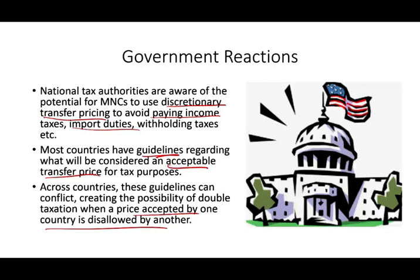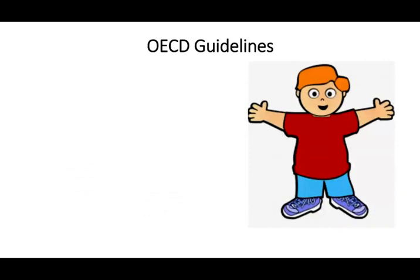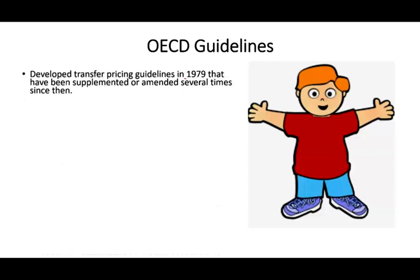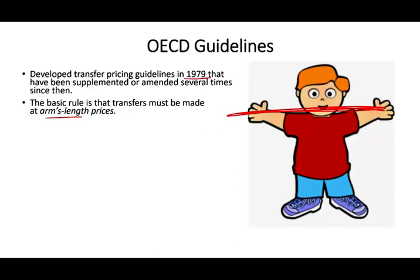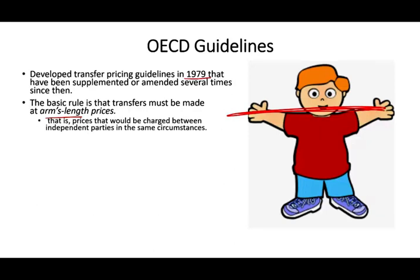The OECD guidelines started to develop transfer pricing rules as early as the late 1970s, and they have supplemented and amended those rules over the years. The basic rule is that transfer prices must be made at arm's length — meaning the prices that you would charge between independent parties in the same circumstances.